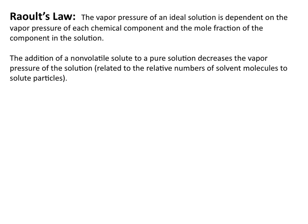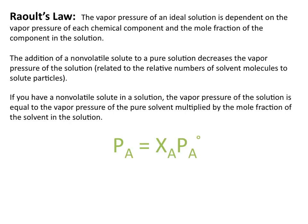If you add a non-volatile solute to a solution, that non-volatile solute will essentially have no vapor pressure. But you're decreasing the vapor pressure of the pure solution because Raoult's Law says that the vapor pressure is dependent on the vapor pressure of each chemical component and the mole fraction of that component. So by adding a solute to the solution, you're decreasing the mole fraction of the solvent. If you have a non-volatile solute in a solution, the vapor pressure of the solution is equal to the vapor pressure of the pure solvent multiplied by the mole fraction of the solvent in the solution.